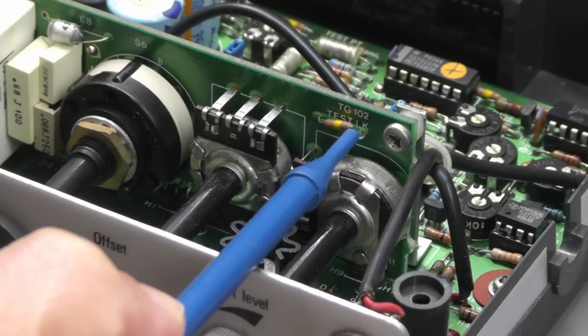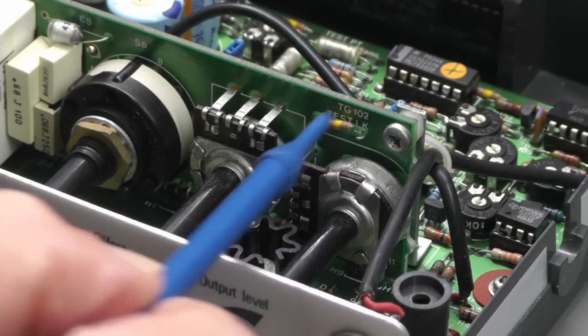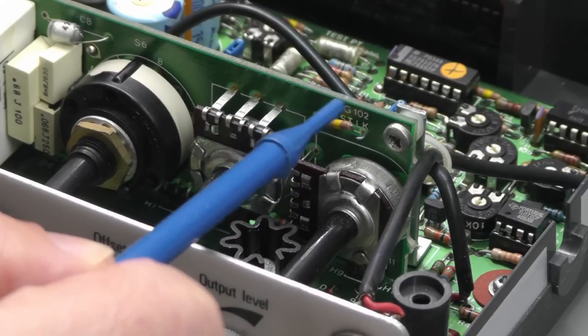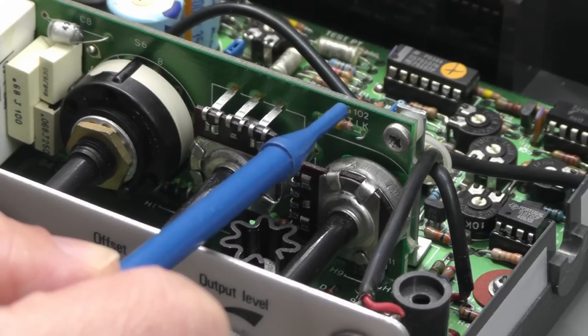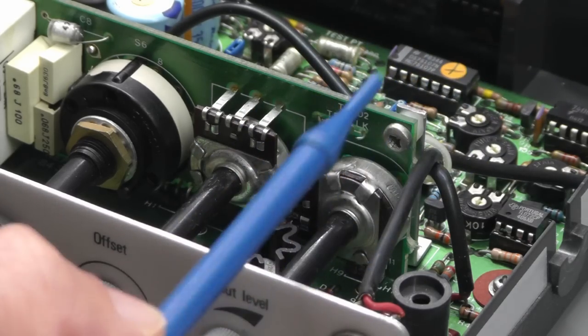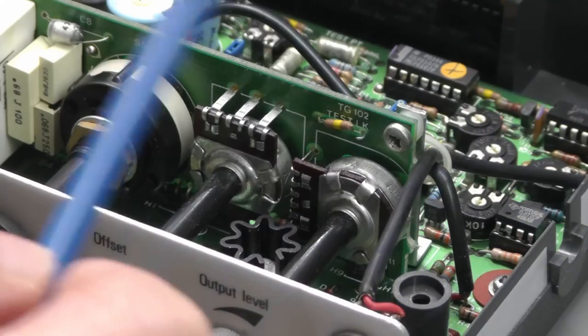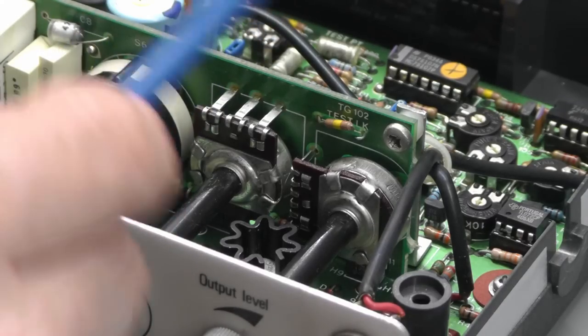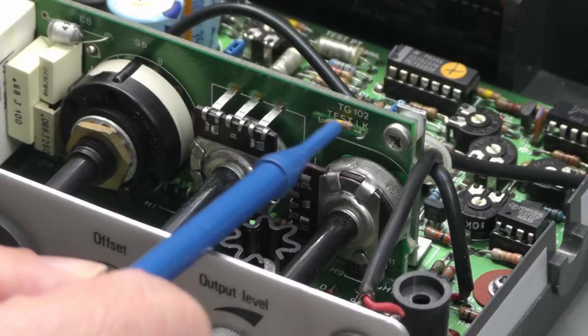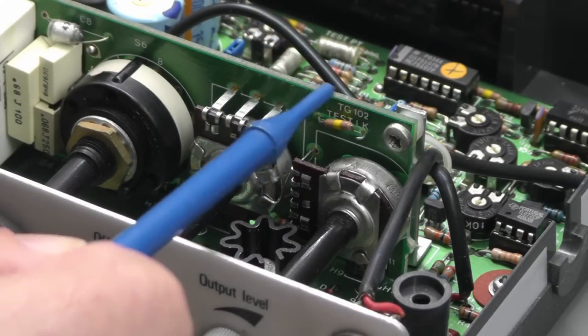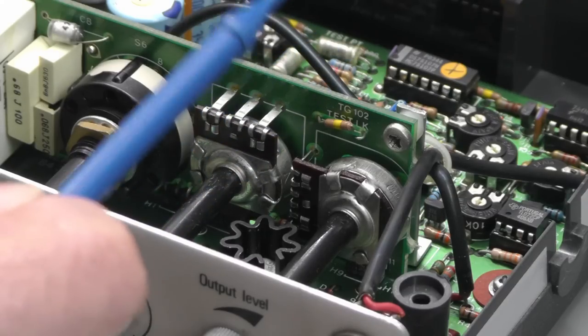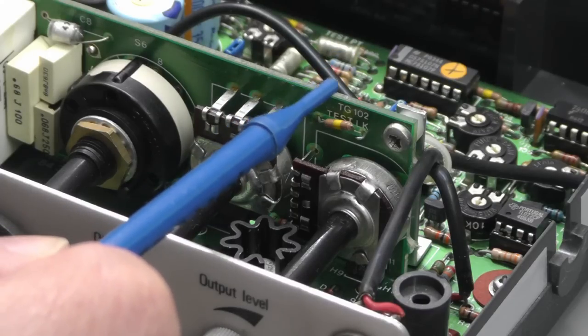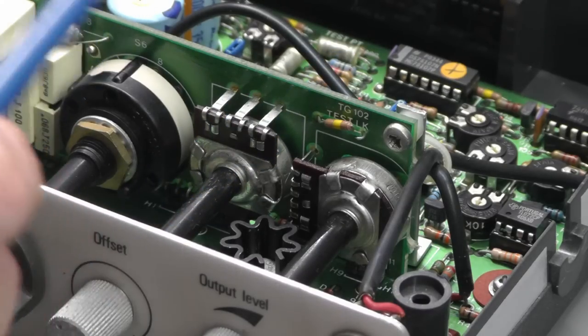Over on the daughter board, we've got a test link which is open circuit and looks like it's been cut. Perhaps that's a link for test mode during calibration, and once it's done they just break that. There are other links on the board using the same style, but this one's marked test LK and it's been cut open. It looks like a problem at first, but I don't think it is.